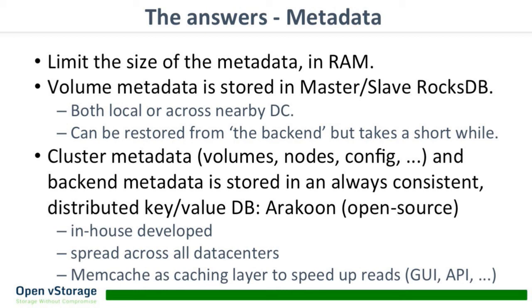Volume metadata is stored in a RocksDB master-slave setup — that's something we had to write ourselves, since RocksDB is just a database. Cluster metadata is kept in our own distributed key-value store, spread across all the data centers and sped up using memcache as a caching layer on top. It's also open source — it's called Arakoon.